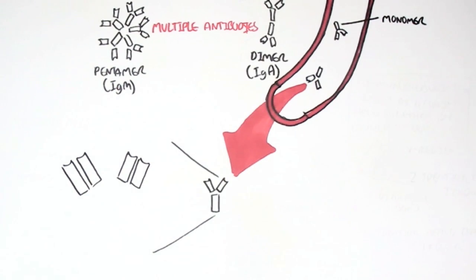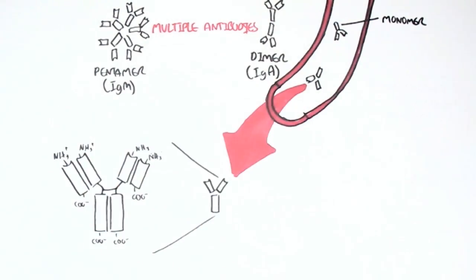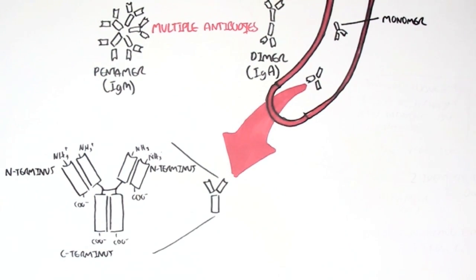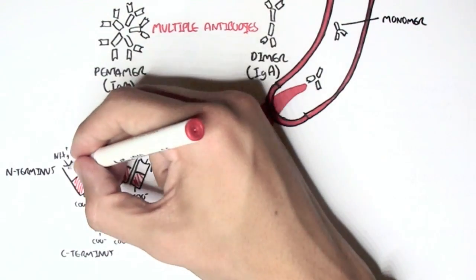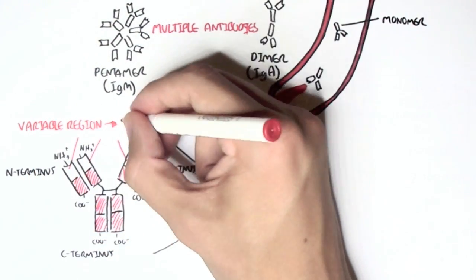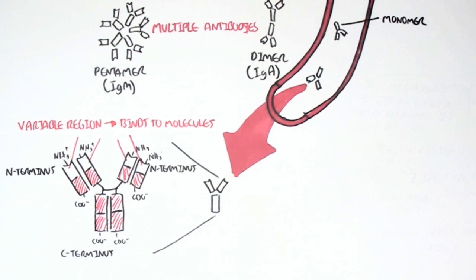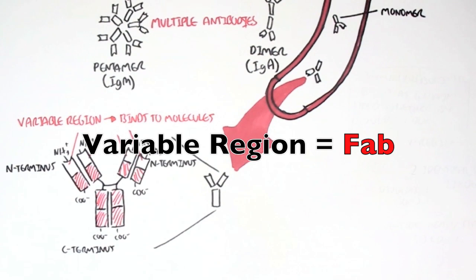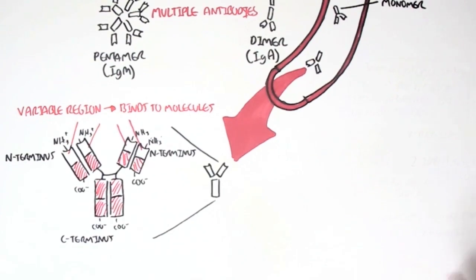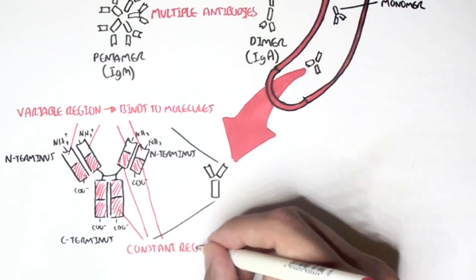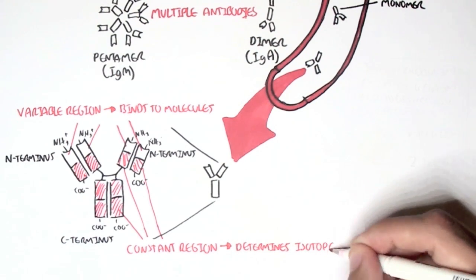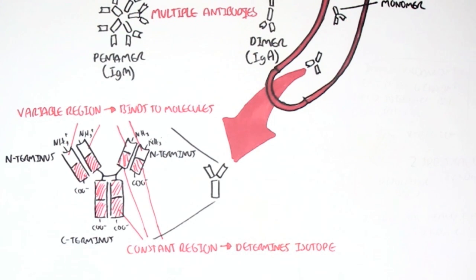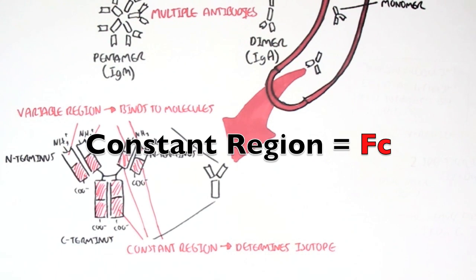Because antibodies are protein, antibodies have a terminal ending in an amine group and a C-terminal termination with a carboxyl group at the other end. The variable region, which will bind onto antigens and onto molecules of a pathogen, is also known as the FAB portion of the antibody. On the bottom is the constant region, which will determine what isotype — meaning what class — the antibody is in. The constant region is also known as the FC portion of the antibody.